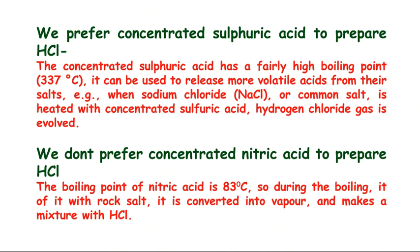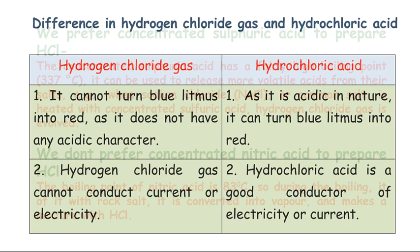To prepare hydrogen chloride, we prefer concentrated sulfuric acid because it has a very high boiling point of 337 degrees Celsius and will not evaporate during heating. We do not use nitric acid because it has a boiling point of only 83 degrees Celsius, and during boiling of rock salt, it may evaporate and mix with the HCl gas, making separation difficult.